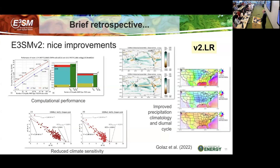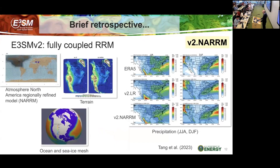A question was asked: for climate sensitivity, was the reduction from 5.3 to 4 a purposeful tuning toward a more realistic value, or did it emerge? The 4 degrees emerged. There's a paper by Xie that goes over all the changes made and tries to explain what happened. We're not to the point where we can say 'I want an ECS of 3, give me a model.' The ECS of 4 was not tuned — it was the emergent value from the changes in the model.